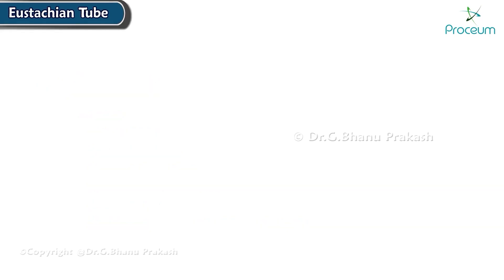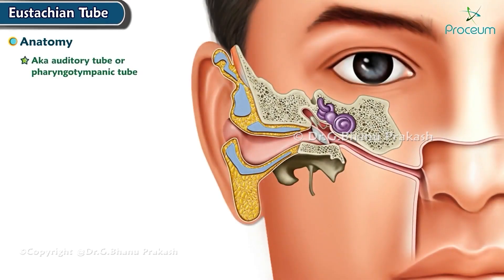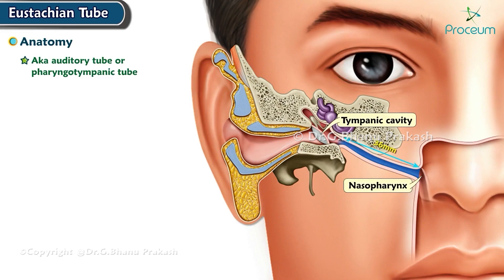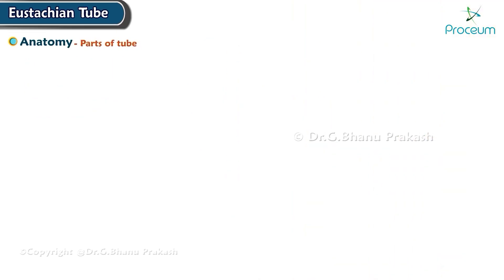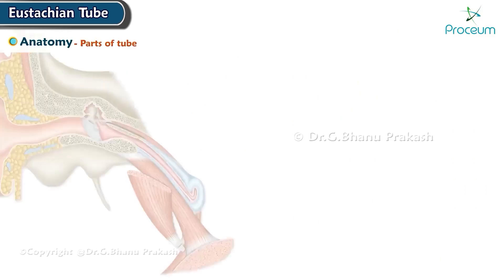Eustachian tube anatomy. The Eustachian tube is also known as the auditory tube or the pharyngeal tympanic tube. It connects the nasopharynx to the tympanic cavity. The length of the tube is around 36 millimeters. Directionally, from the tympanic end, it runs downwards and forwards, forming an angle of 45 degrees with the horizontal.